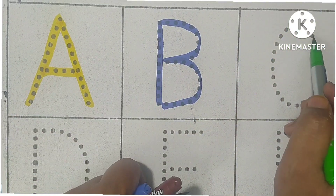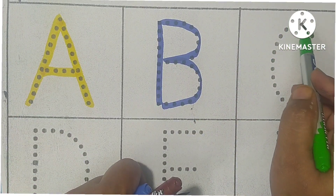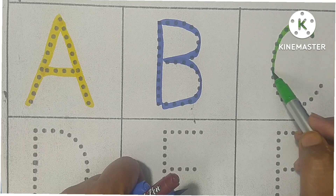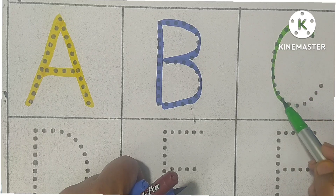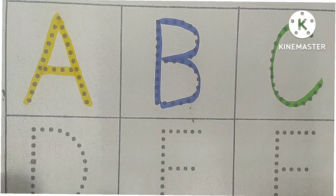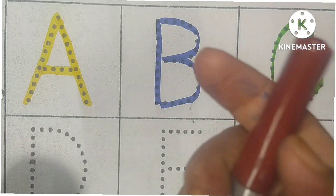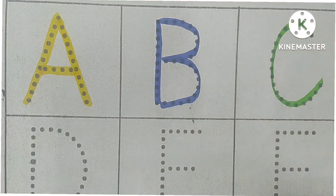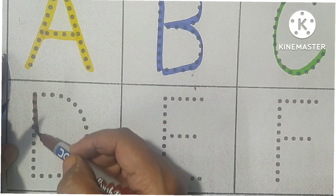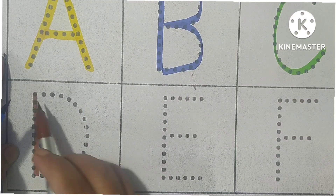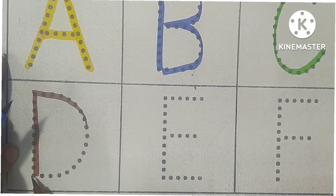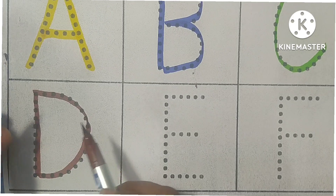Green color. C, C for cat. C for cat. Brown color. D, D for duck. D for duck.